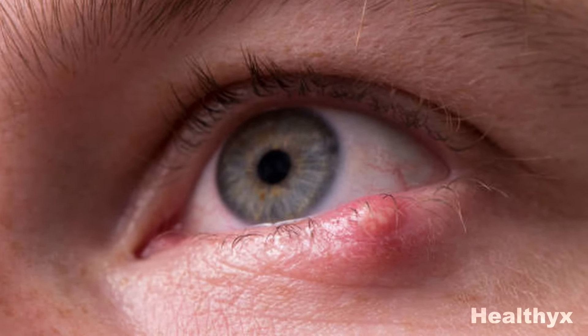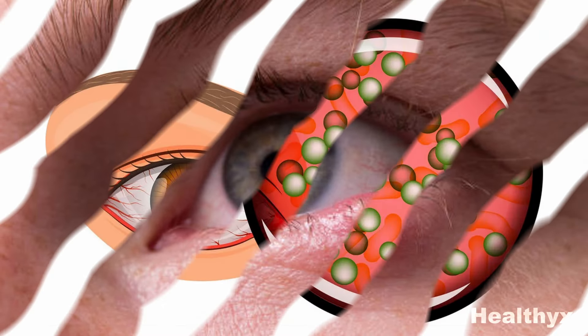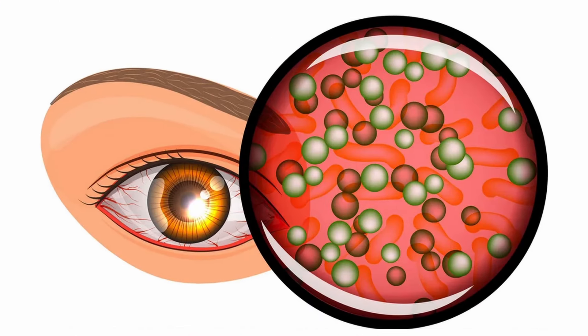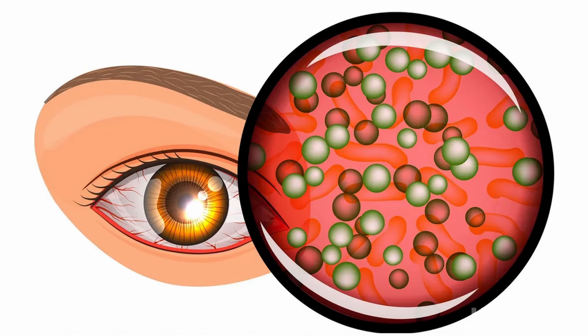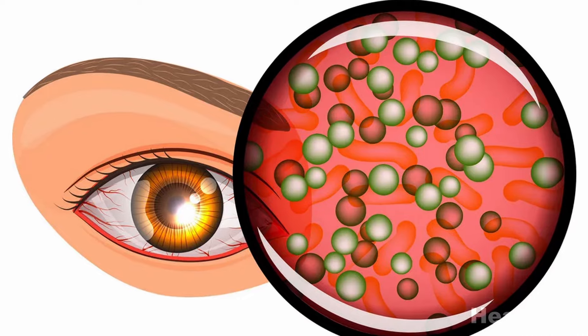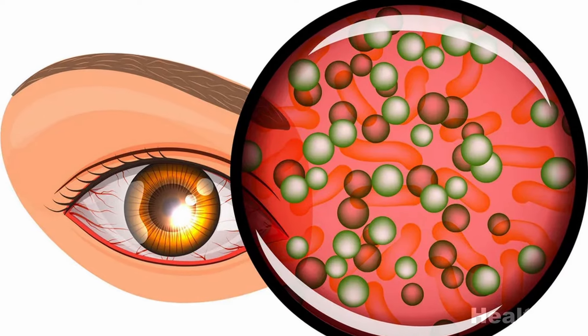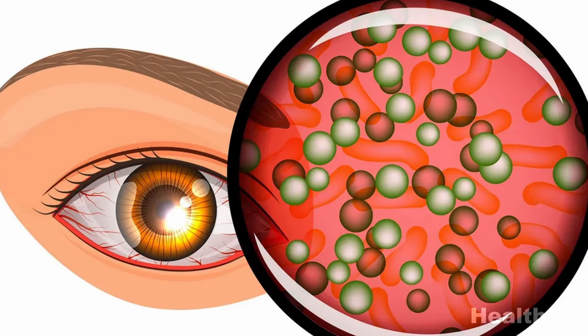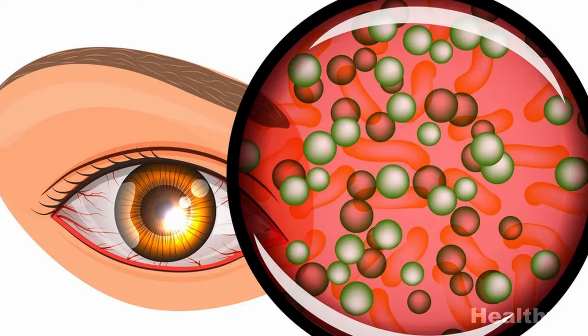However, it is possible to have more than one sty at a time. A sty is formed when dead skin, dirt, or oil builds up in the oil glands along the edge of your eyelids and bacteria begin to grow inside, causing the sty to develop.